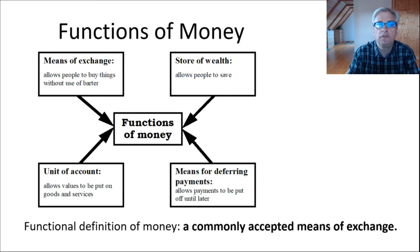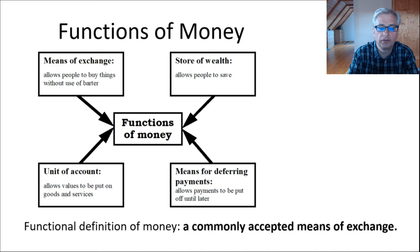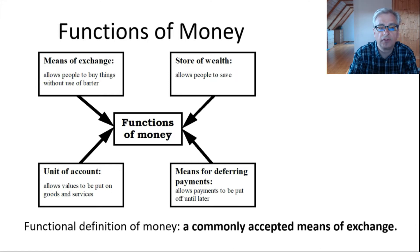If we say money is what money does, then we call for a functional definition of money. Since out of those four functions the most important, the most useful, the primary function is the means of exchange, we will say that money is a commonly accepted means of exchange.